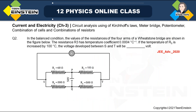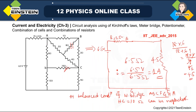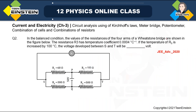Now we'll go to the next question. Since these are from JEE Advanced papers, they are a bit lengthier — you have to solve them quickly so you can attempt all questions. We have another nice question: in balanced condition, the values of the resistances of the four arms of a Wheatstone bridge are shown in the figure. Let me draw the equivalent circuit.